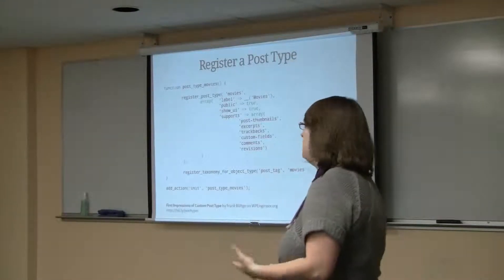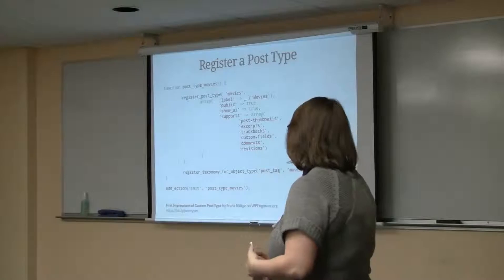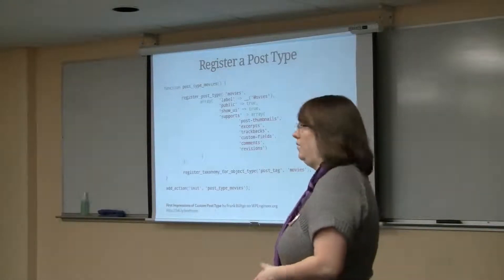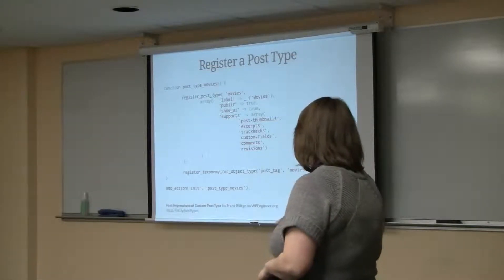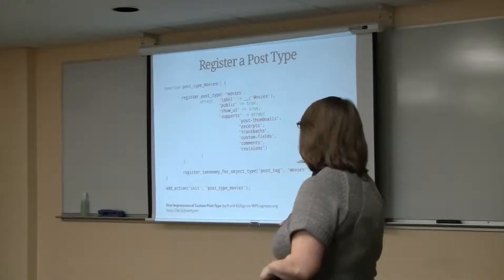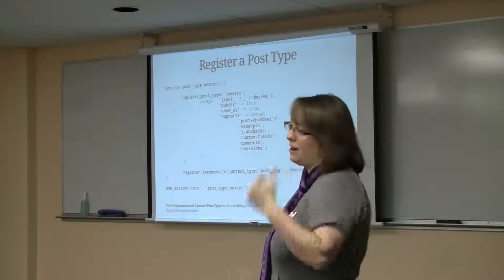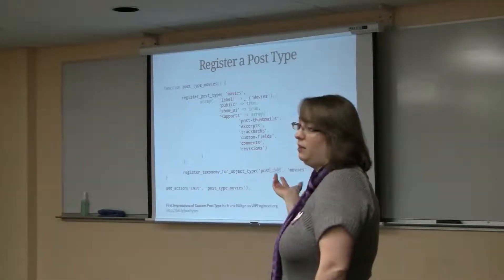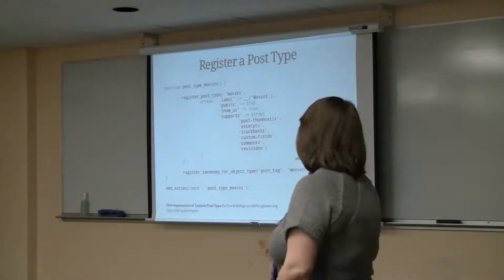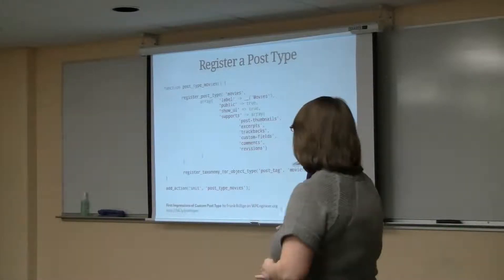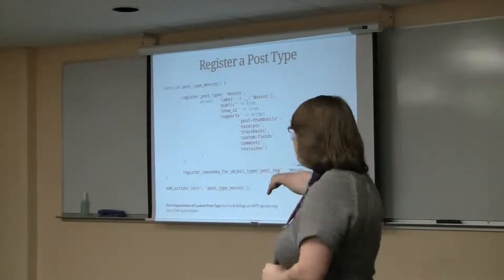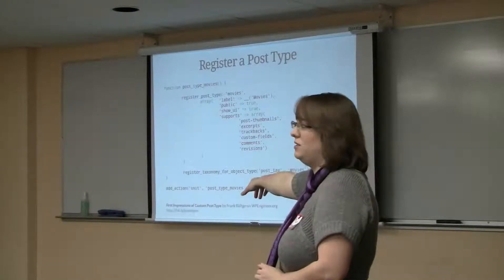You define what the post type supports — does it support comments, can you post thumbnails with it? Those are completely unnecessary for some purposes, like when you're creating a plugin that uses post types. Then you want to tell the post type which taxonomies to use. If you want to tag or categorize them at all, you can use the same blog categories or blog tags. Later in another slide we're going to register our own custom taxonomy. This is the code from bit.ly/post-types.